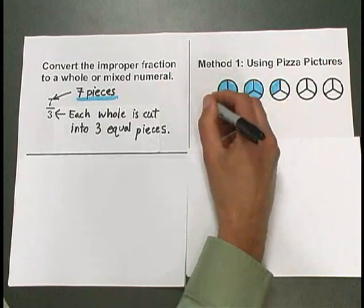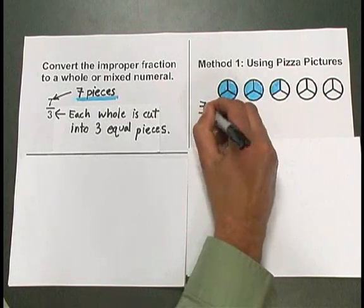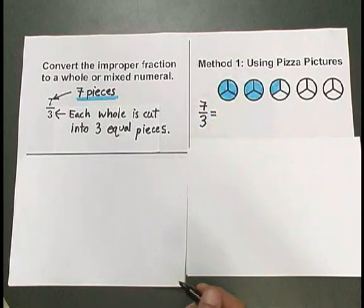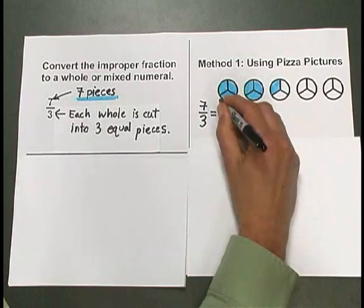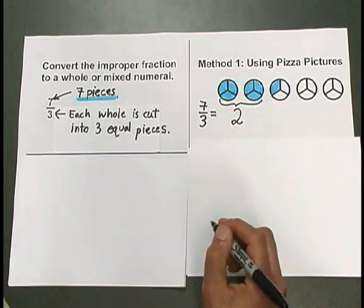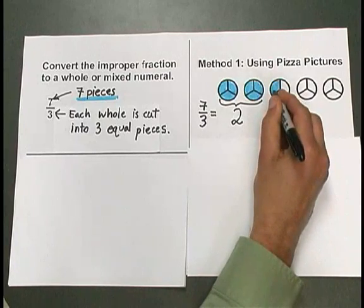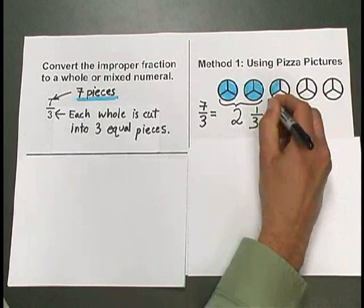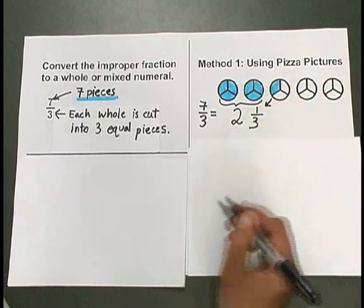So now I can think of my improper fraction 7 thirds as being equal to a mixed numeral. I've shaded 2 whole pizzas, so I'll write 2 whole, and then I've shaded 1 third of another pizza.